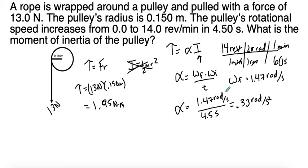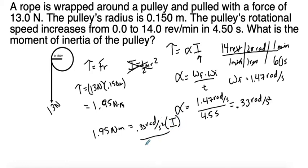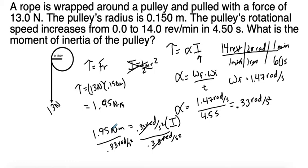Now applying Newton's second law: torque of 1.95 Newton meters equals 0.33 radians per second squared times moment of inertia. Solving for moment of inertia — dividing 1.95 by 0.33 — we get 5.91 kilograms times meters squared.